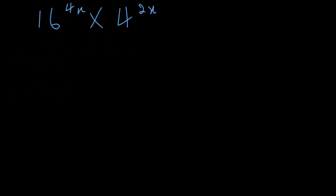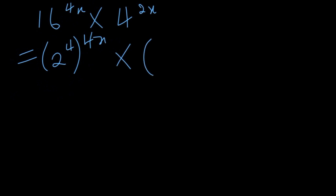Let's say I give you 16 to the power of 4x multiplied by 4 to the power of 2x. We are still multiplying exponents, but the bases are not the same, so we cannot apply that multiplication rule directly. Our mission will be to make the bases the same. Now 16 can be written as 2 to the power of 4, raised to the power of 4x, and 4 can be written as 2 to the power of 2, raised to the power of 2x. Now the bases are the same.